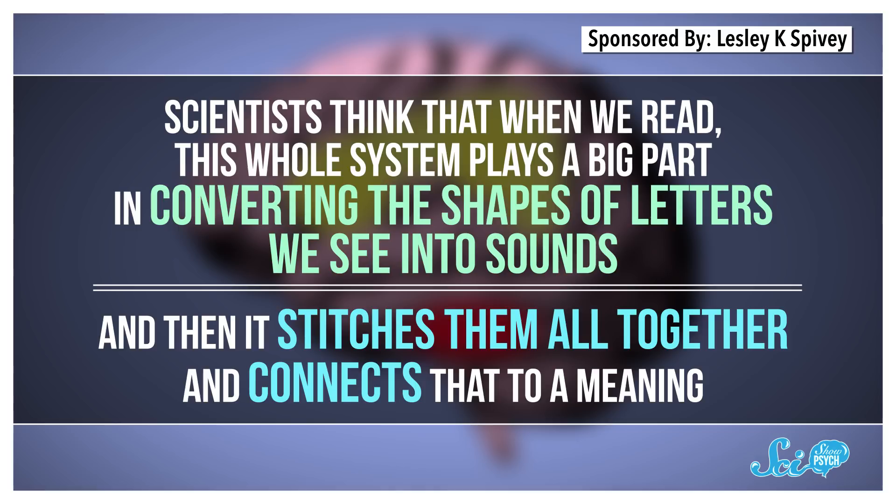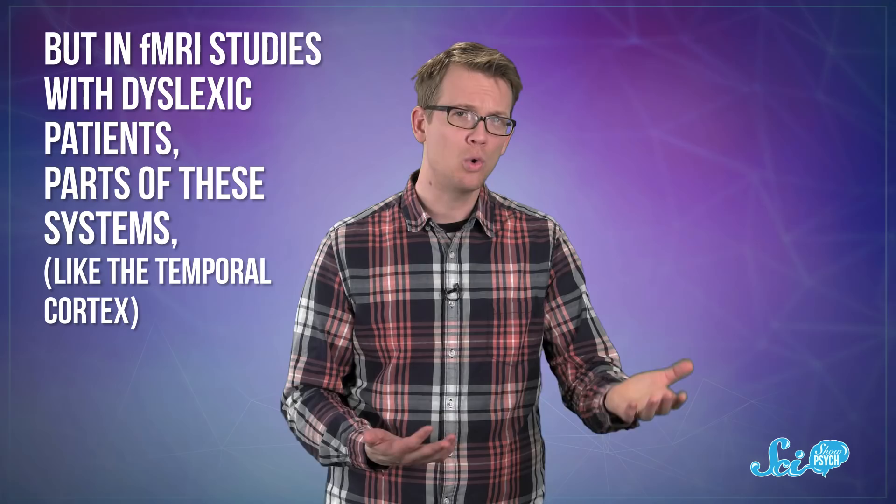But in fMRI studies with dyslexic patients, parts of these systems, like the temporal cortex, have shown lower levels of activation when they read. And different brain regions tend to show higher activation, like frontal areas, for example, which are usually involved in higher levels of thinking and problem solving.